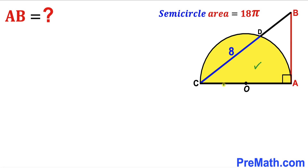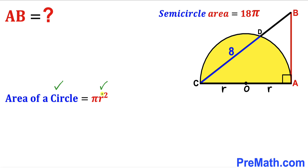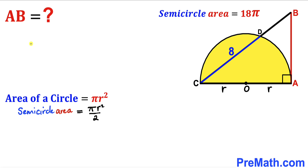Let's focus on this semicircle. Let me label radius OC as lowercase r. Likewise, OA is the radius of the same semicircle, so I'll also call it r. We are going to calculate the value of r. Since the area of this semicircle is 18π, and the area of a semicircle is πr²/2, I can write πr²/2 = 18π.